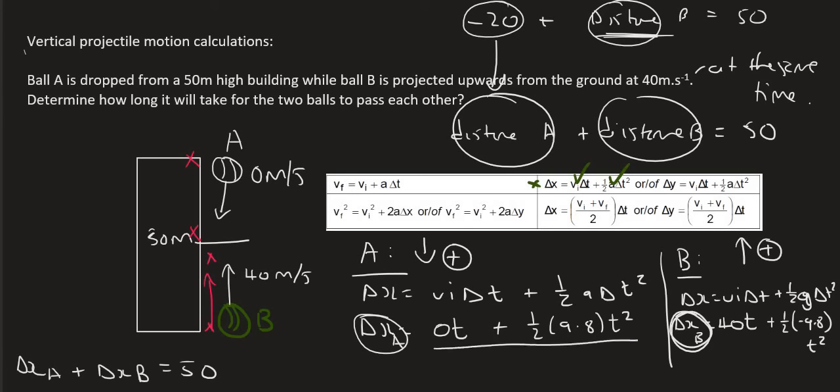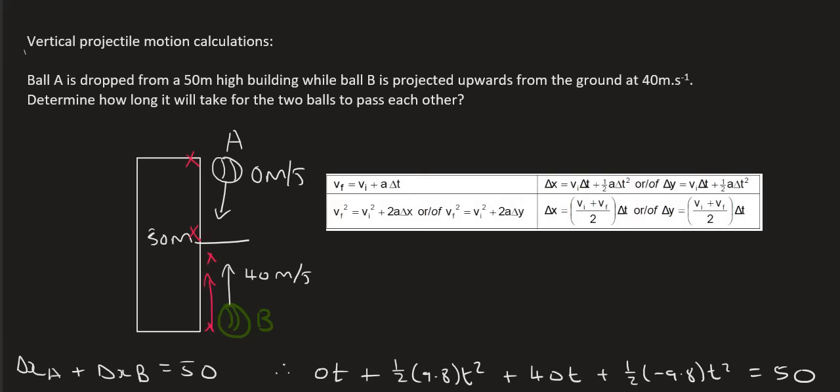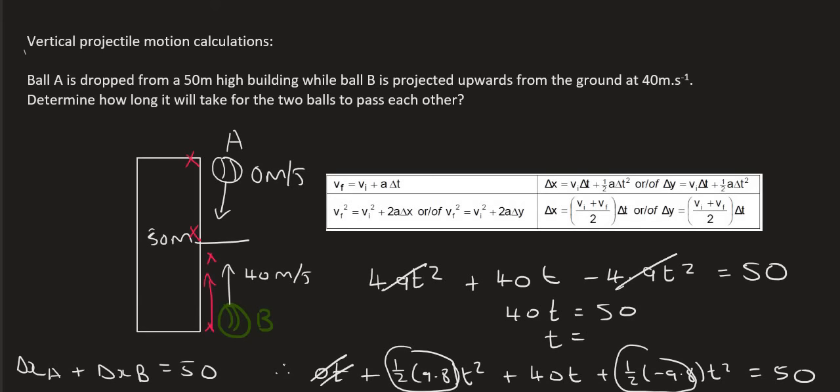So I'm just going to fill these formulas in. So that's going to be therefore 0t + ½(9.8)t² plus now I'm going to do ball B which is 40t + ½(-9.8)t² should give us 50. Now it just becomes a matter of solving this equation. So this part here is 0. This part here becomes 4.9t² + 40t but then this part is -4.9t² and that should equal 50. So what's nice is that that part and that part cancels and so we end up with 40t = 50. And so if you had to go and divide you'd end up with t = 1.2 seconds.